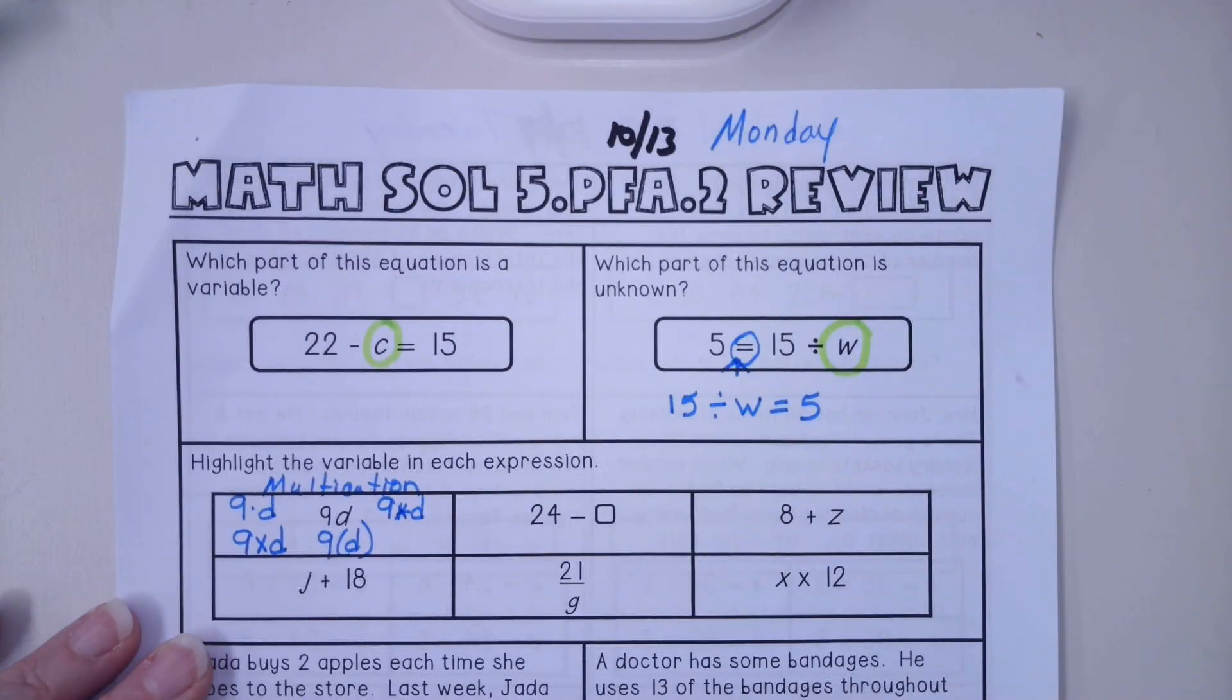The next one I think that's kind of questionable is this one right here. Think about what 21 over g is. Is that addition, subtraction, multiplication, or division? 21 over g is a division problem that's saying 21 divided by g. And your variable is the g.